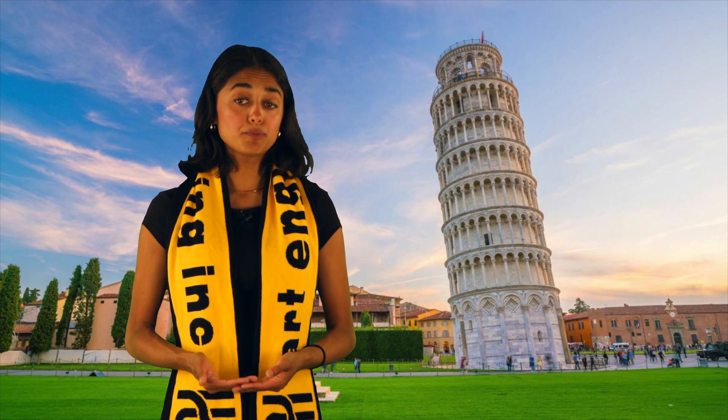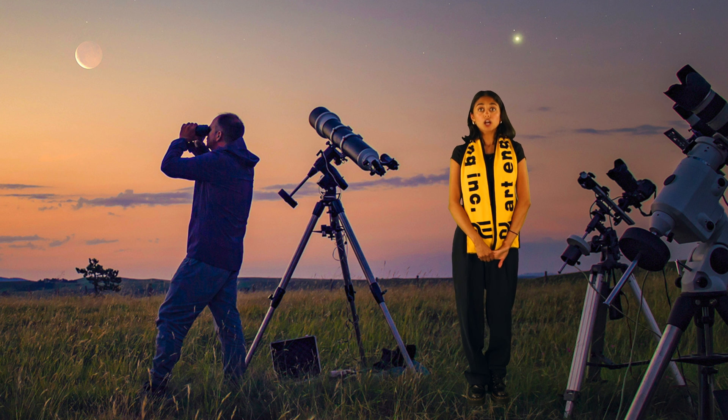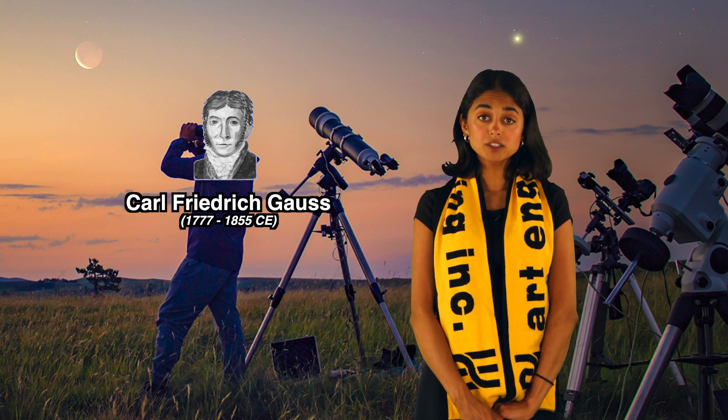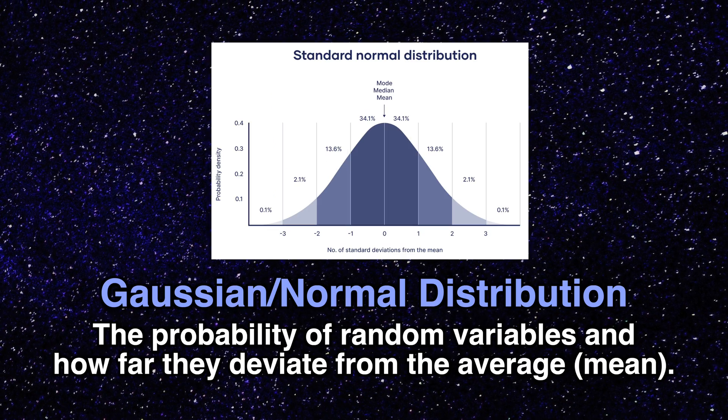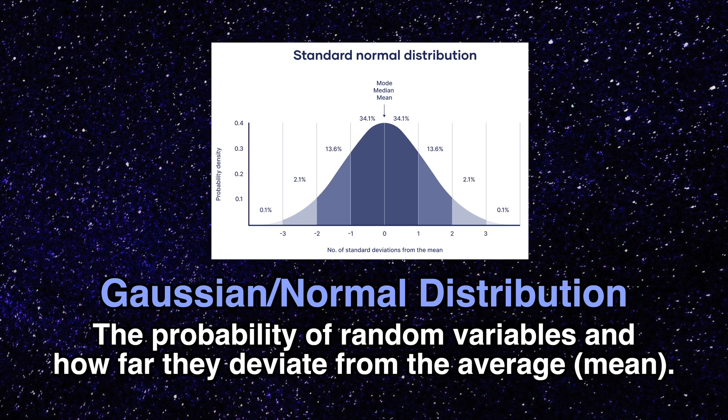One of the founding fathers of these probabilities is German astronomer Karl Friedrich Gauss, who came up with the idea for normal distribution in 1809 when measuring errors in astronomy. The idea of normal distribution has to do with the probability of random variables and how far they deviate from the average, also known as the mean. This helps mathematicians understand where an uncertainty will most likely fall into.